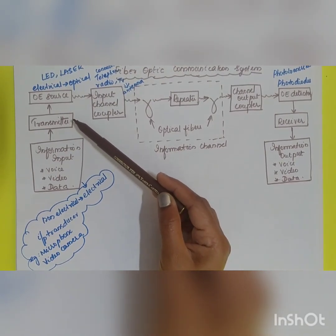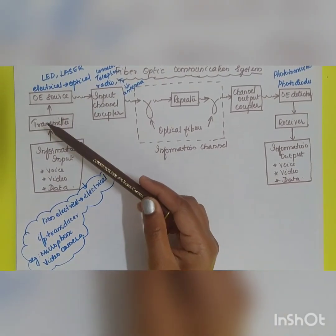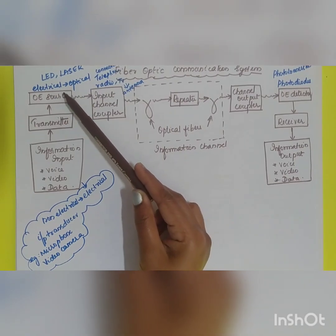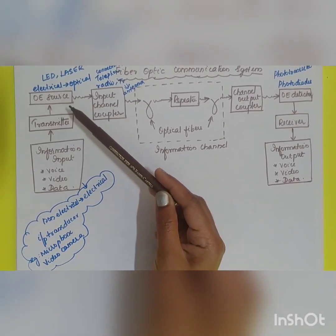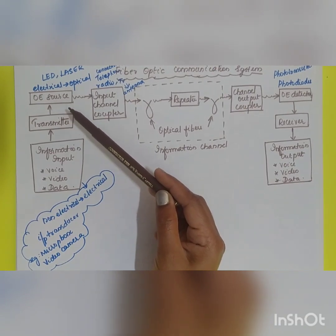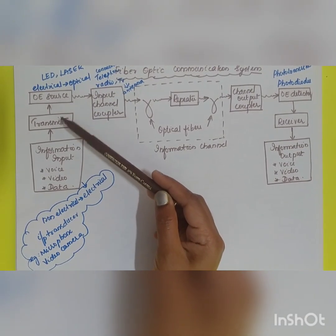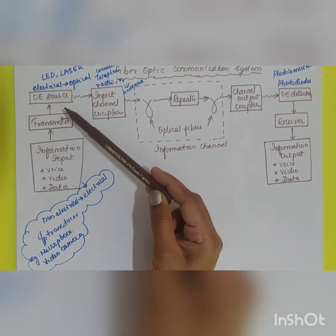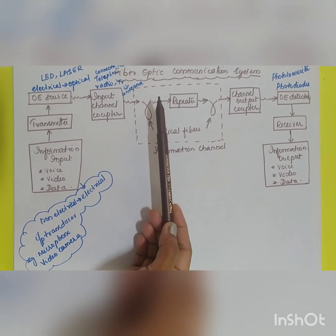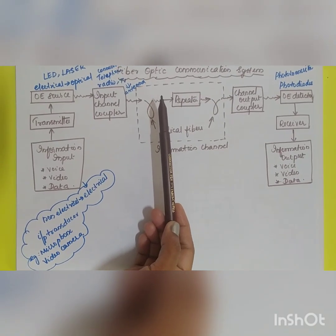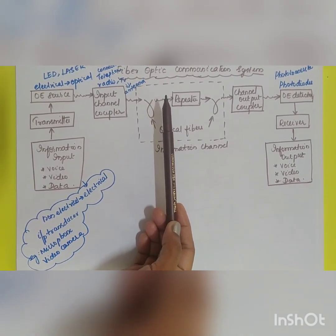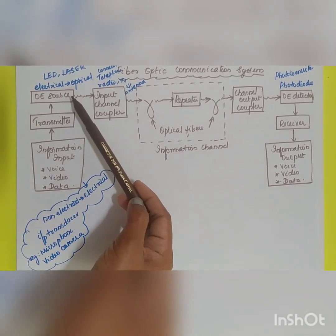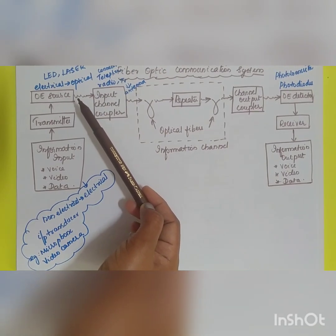The electrical signal then goes to the next part called the transmitter. The transmitter, along with the optoelectronic source, constitutes the transmitter side. The transmitter is essentially the modulator stage in which processing of the electrical signal takes place — for example, a voltage-to-current converter — so that the signal is appropriate to be impressed onto the electromagnetic carrier generated by the optoelectronic source.